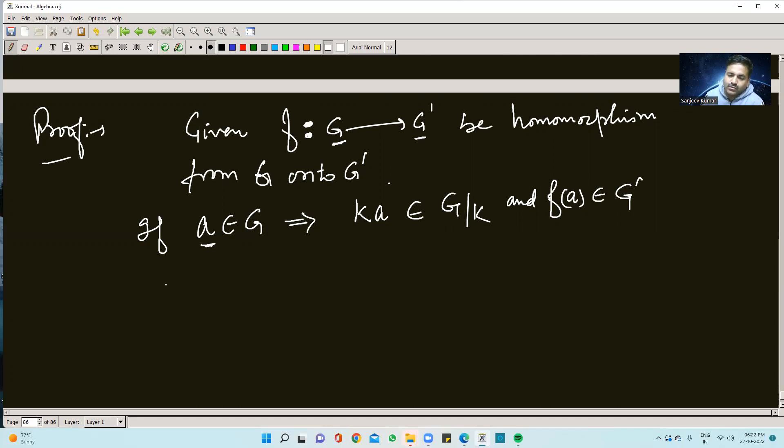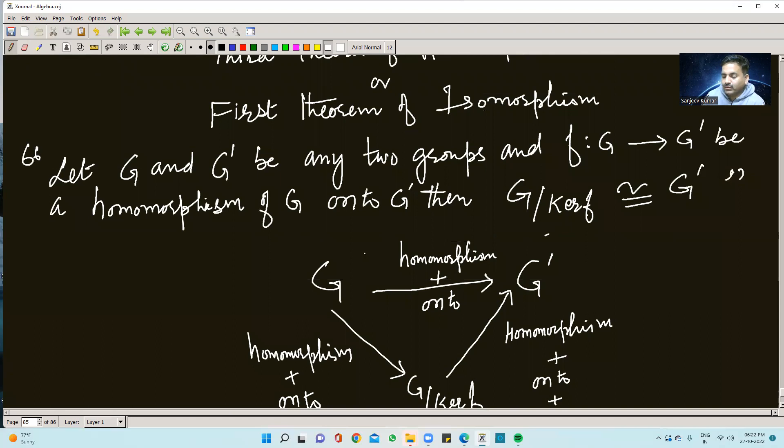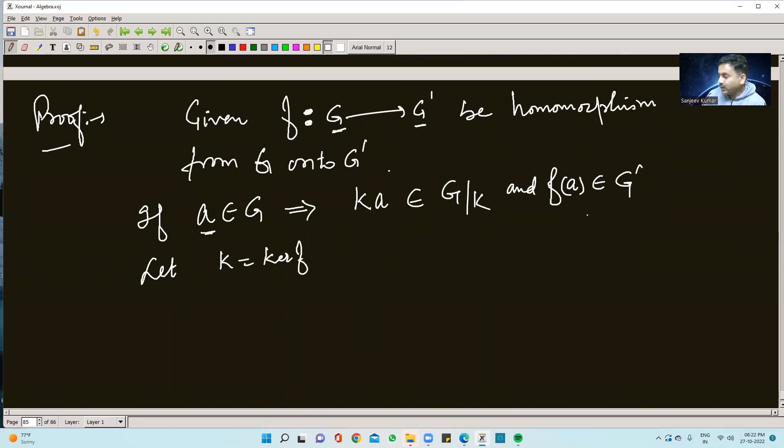So first, kernel of f we will denote as K. Because writing G by kernel of f repeatedly is a bit lengthy, we just write kernel of f as K. Also, therefore you can say K is a normal subgroup of G. Why? Because of first theorem of homomorphism.